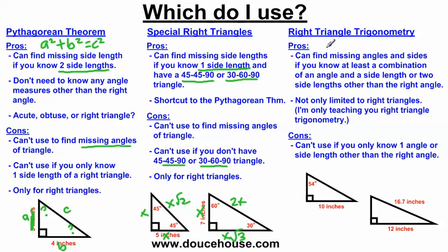And that's why I really love right triangle trigonometry. This is the most versatile of these methods because it's not just limited to sides or just limited to angles. The pros are: you can find missing angles and sides if you know at least a combination of an angle and a side length, or if you know two side lengths other than the right angle. If you know one of the angles other than the 90 and one of the sides, you can figure out all the other missing angles and the other two missing sides. It's not limited to the specific 45-45-90 or 30-60-90 triangles, and it's not only limited to finding sides.